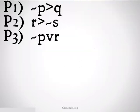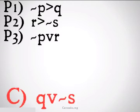Our first argument is premise one: not P implies Q; premise two: R implies not S; premise three: not P or R; and we want to conclude from all this Q or not S.